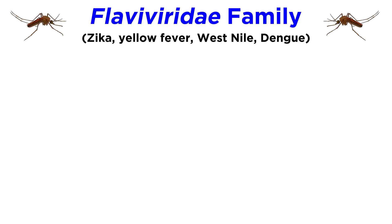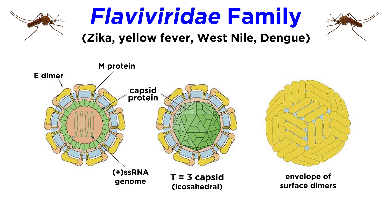Zika virus is a mosquito-transmitted flavivirus in the Flaviviridae family, along with yellow fever, West Nile, and dengue. As a brief refresher, members of the Flaviviridae family are positive, single-stranded, enveloped RNA viruses. Like other flaviviruses, the Zika virus genome is enclosed within an icosahedral capsid.